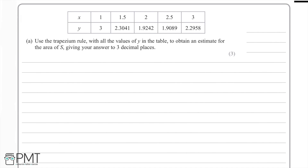We're asked to give our answer to 3 decimal places. We can work out the area using the trapezium rule by doing one half times h, where h is the width of each strip. Then inside big brackets we have y₀ plus yₙ, and then we add two lots of y₁ plus y₂ plus all the other y's up to y_(n-1). Then we close our brackets. This is the trapezium rule.